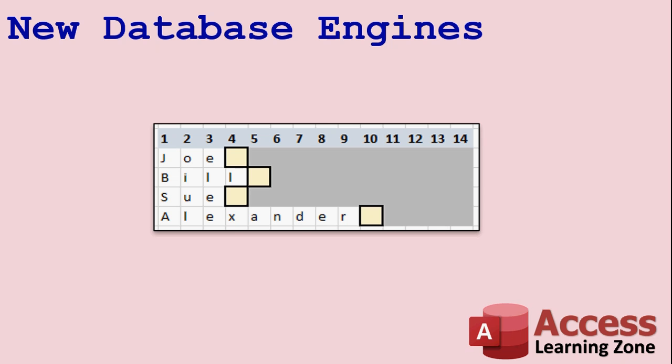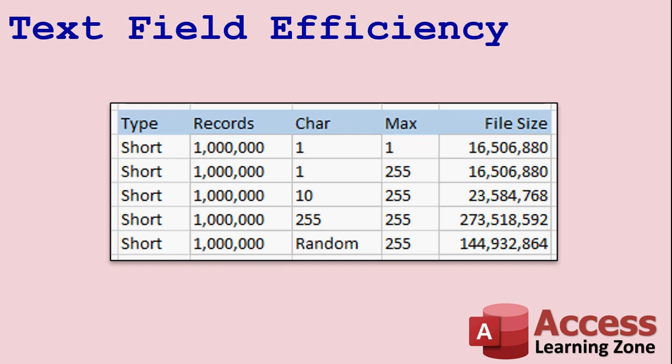In fact, recently I built a database just to test this. I wanted to test how efficient Access stored text information, and I wanted to check how efficient compacting and repairing is. I'm putting together a whole different video on compact and repair, but as far as text field efficiency goes, you can see a million records with one character in the field — whether the max is one or 255 — took up the same amount of information. So Access doesn't care what that max is set to anymore. You can see 10 characters took up 23 megabytes; a full 255 took up 273 megabytes. So it is consistently based on the amount of data in that field, not the maximum size of that field.